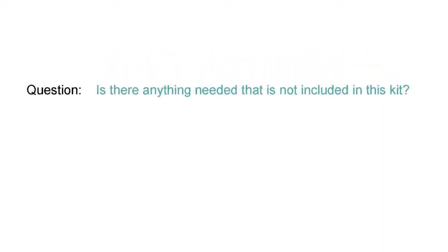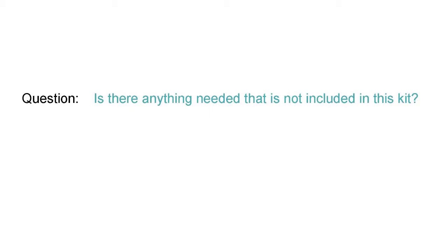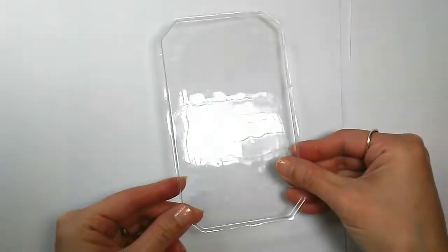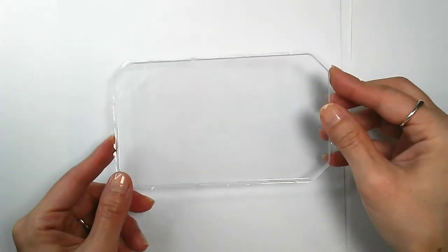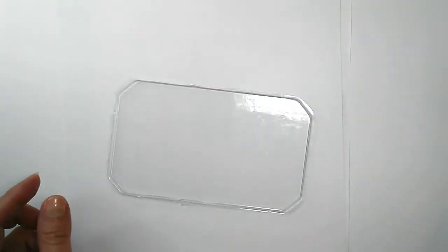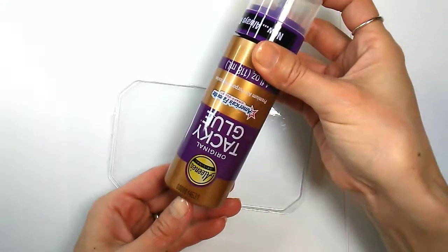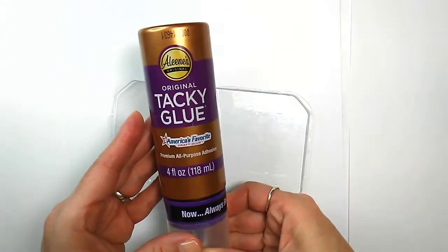Now that being said, there's a customer question on the Amazon website. It says, is there anything needed that is not included in this kit? So let me tell you what you will need in addition to this kit. You're going to need some background paper or whatever it is that you are gluing onto. You might also want a tray or plate to put glue on. You will also need glue. Glue is not included in this kit so you'll have to provide it yourself.